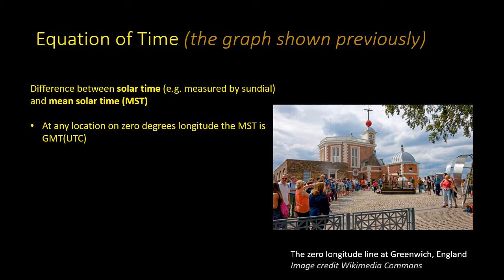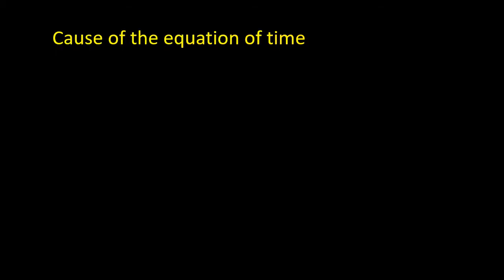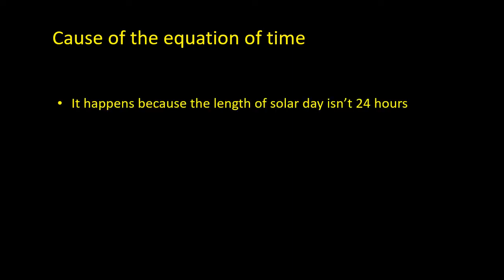At other places the mean solar time will depend on your longitude. The reason for the equation of time is that the length of a solar day isn't always 24 hours, but varies throughout the course of the year.